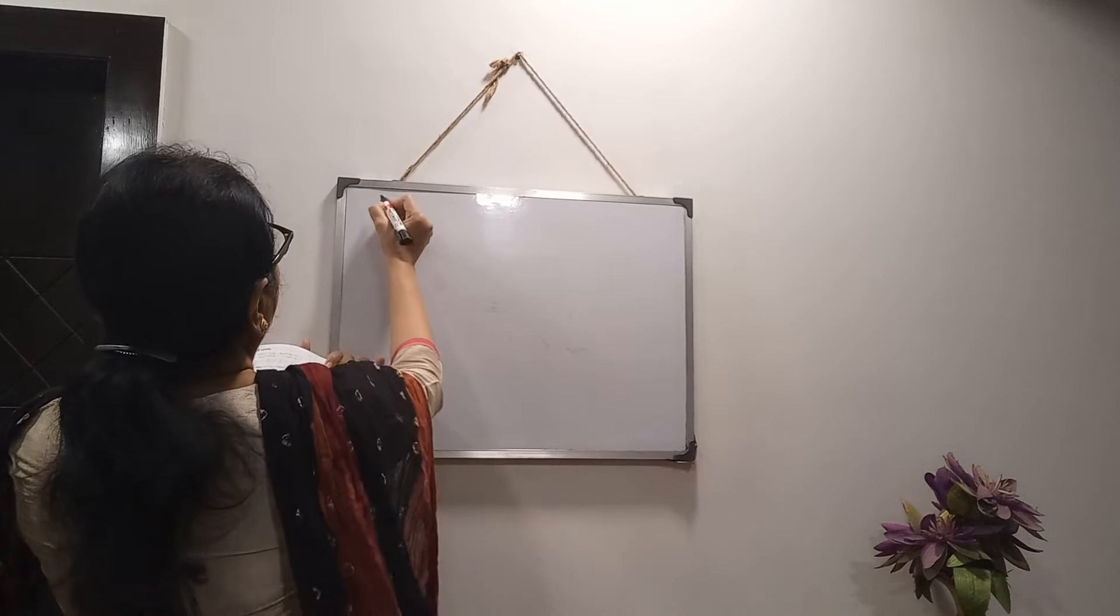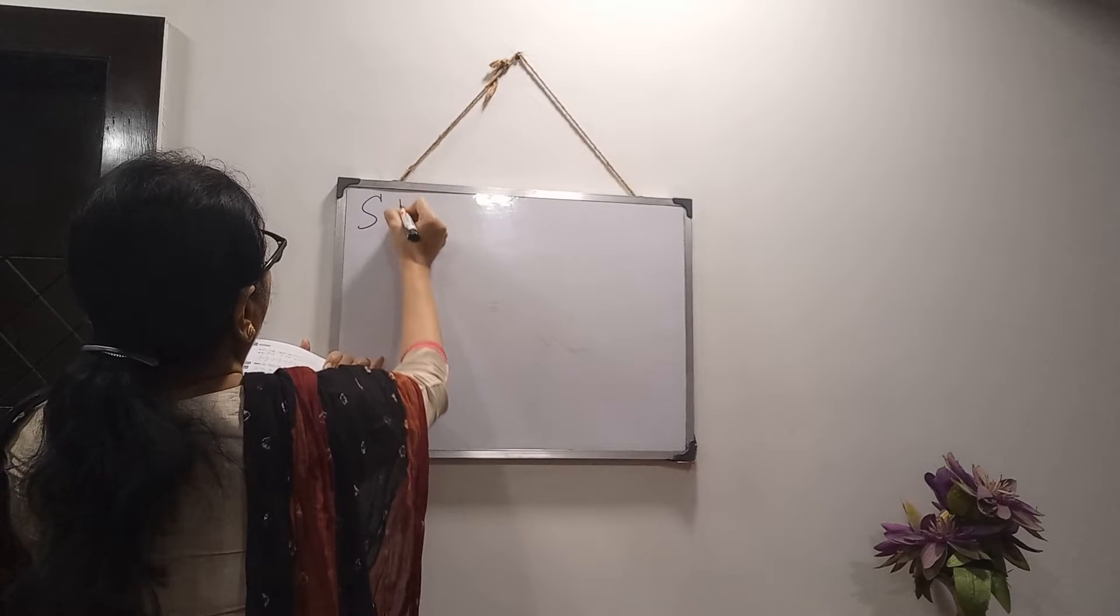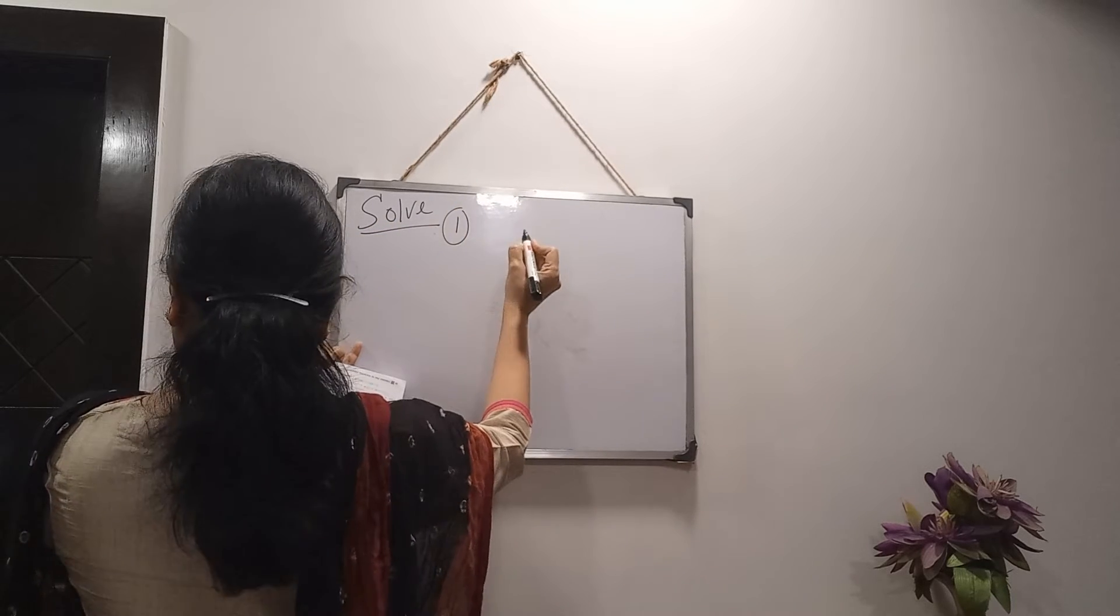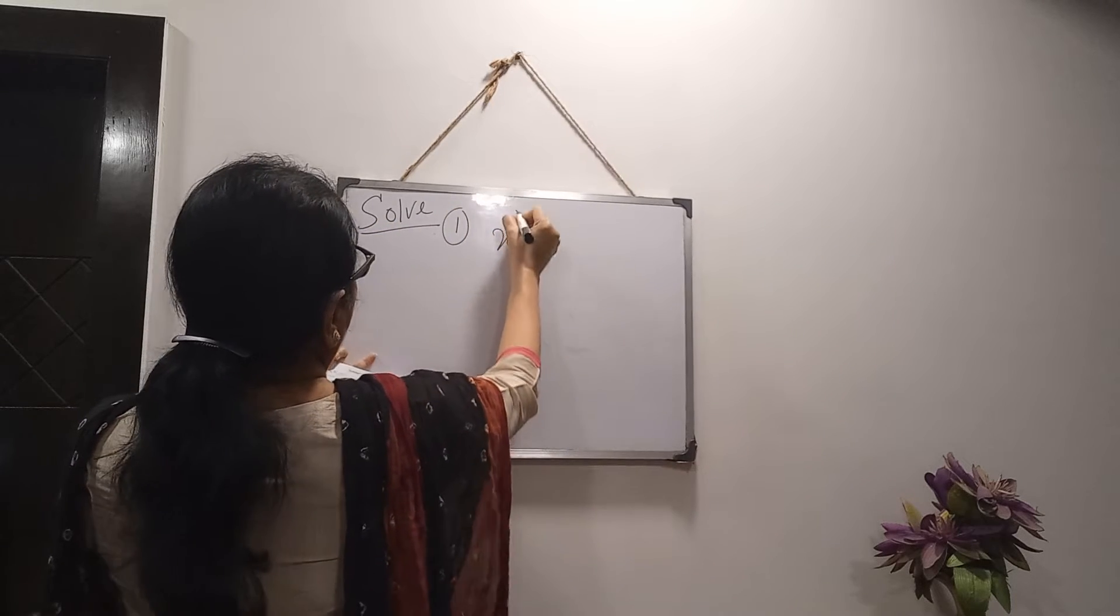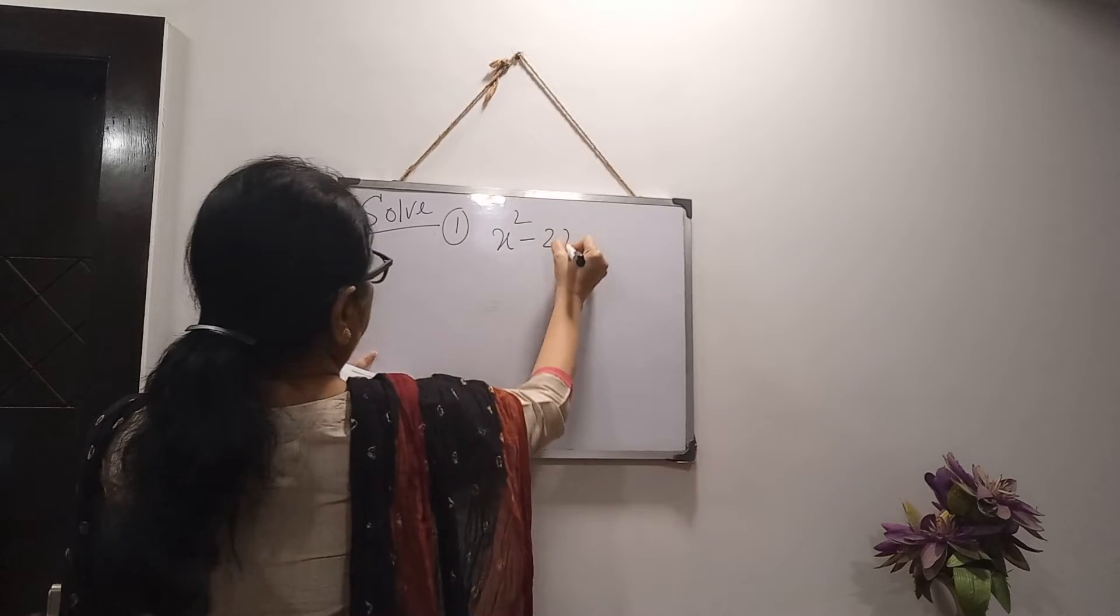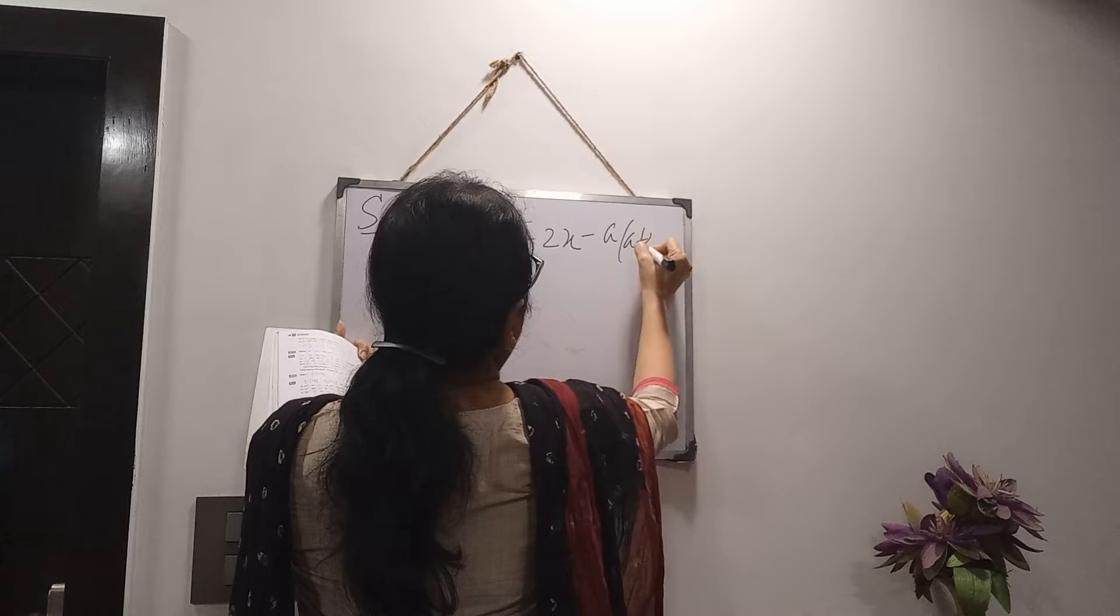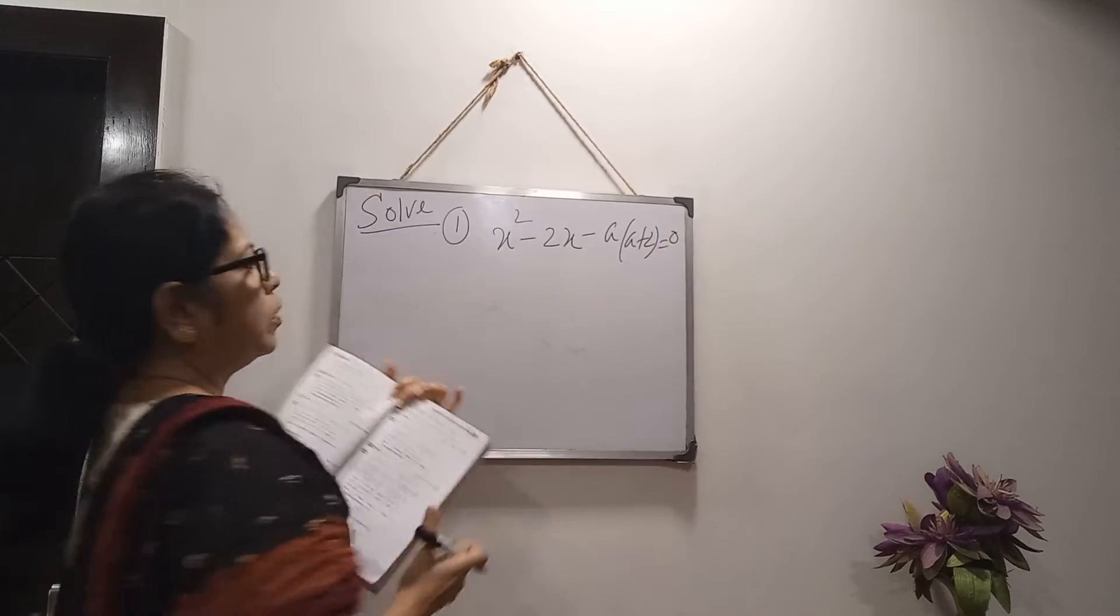In this video, I am starting with solve from reference book and video. If the equation is in this form, x square minus 2x minus a into a plus 2 equals to 0, solve for x.